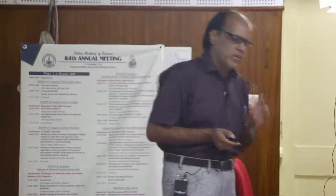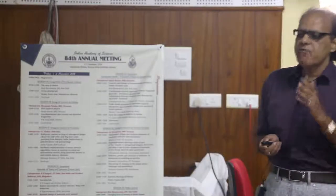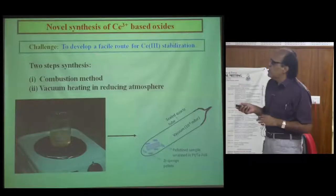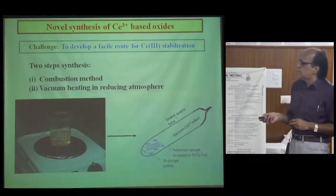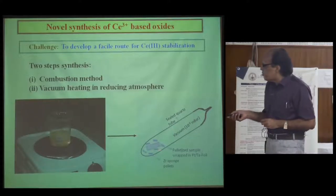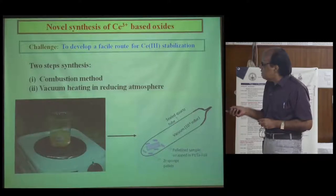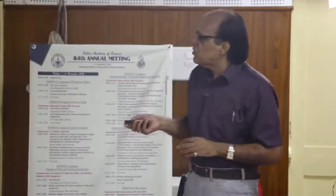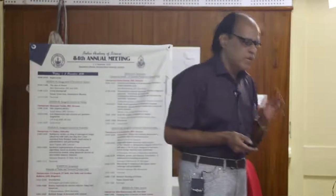We want to make compounds with Ce3+. The reason is that Ce4+ has a 4f0 configuration, whereas Ce3+ has a 4f1 configuration — here we have one unpaired electron, and most properties come from unpaired electrons. So we use a two-step method: a combustion method by which we get material with cerium in 4+ state, make a pellet, put it in a tantalum foil surrounded by zirconium sponge in a quartz tube, evacuate using a vacuum line and seal. The zirconium sponge acts as an oxygen getter. When this ampoule goes to the furnace, the partial pressure of oxygen reduces considerably, and that is the reason for obtaining compounds of cerium in 3+ state, against the wishes of thermodynamics.